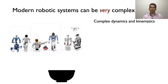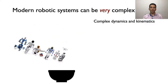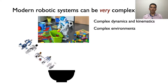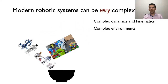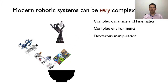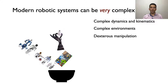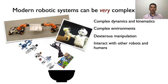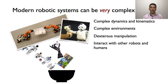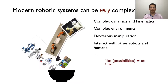Modern robotic systems can be very complex, both in terms of complex dynamics and kinematics, but also in terms of the complex environments where they are supposed to work. There is a growing expectation for the robots of today to handle complex tools, as well as to interact with humans and even other robots. The possibilities are endless as well as the challenges involved in the development of such complex systems.